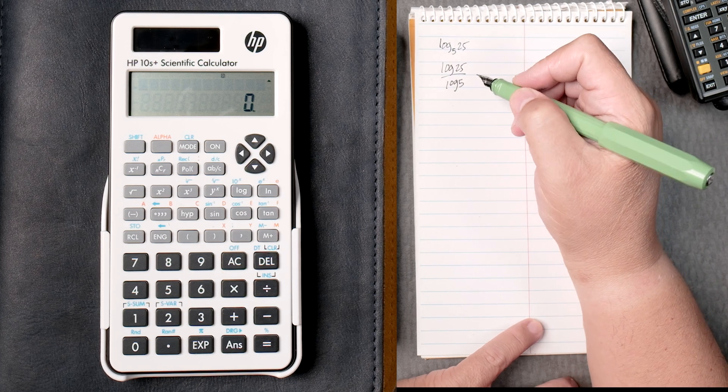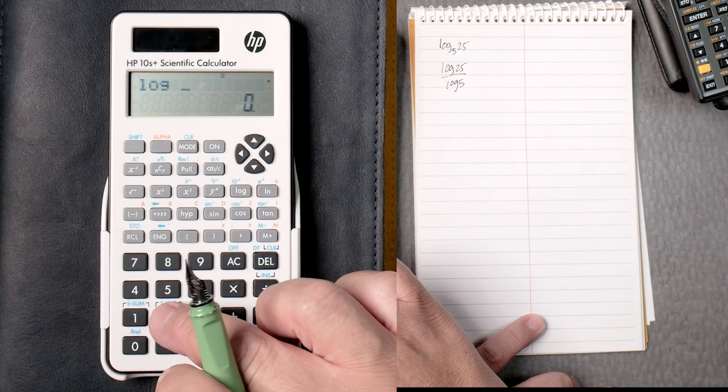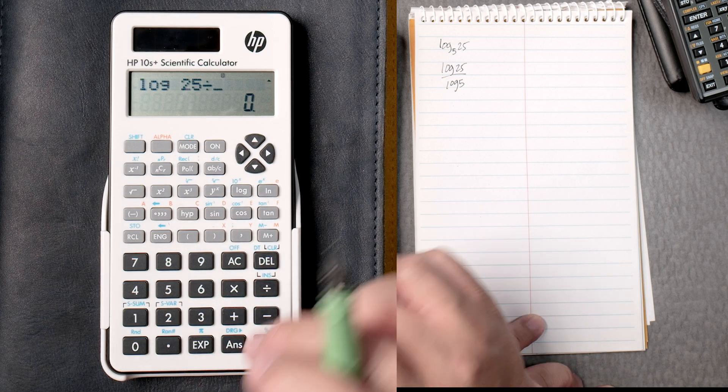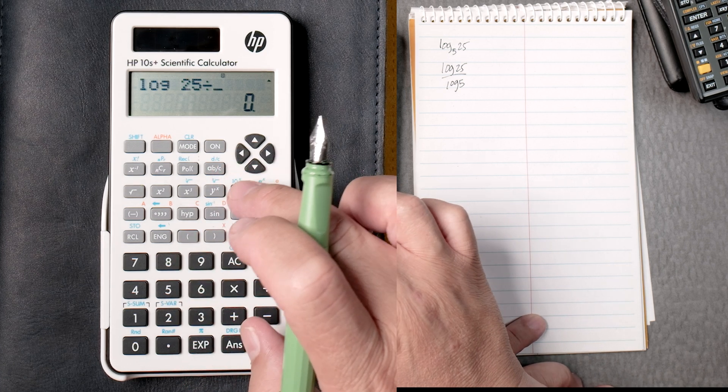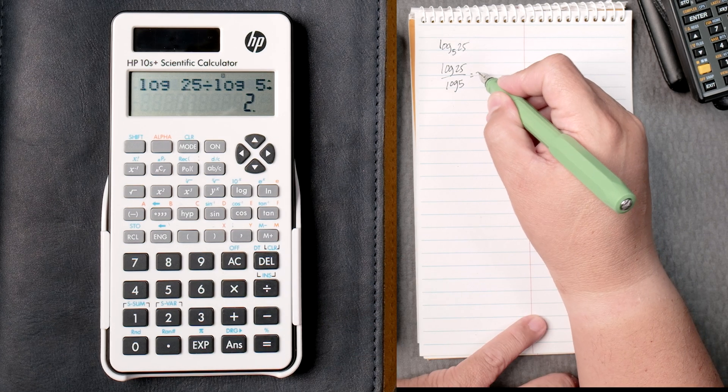It's a rule. So here you would type log 25 divided by the log of 5. Let's see if that works. Equals, yes, 2. Perfect.